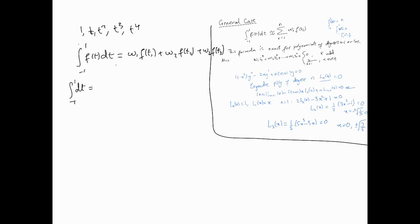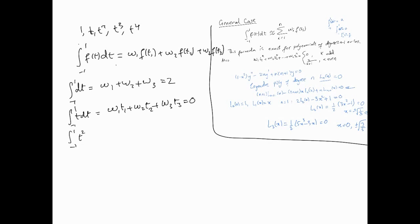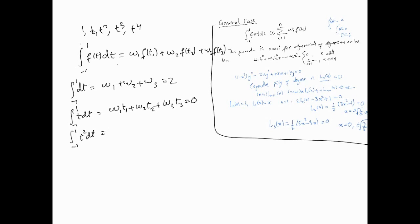We proceed with the same routine as before. The integral from -1 to 1 of dt gives w1 + w2 + w3 = 2. The integral of t dt gives w1·t1 + w2·t2 + w3·t3 = 0. The integral of t² dt gives w1·t1² + w2·t2² + w3·t3² = 2/3, using the formula 2/(k+1) with k=2. This formula is really making things very quick — we don't have to work out the integrals.